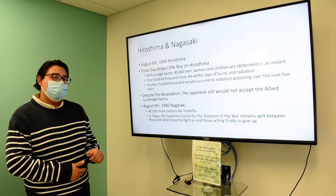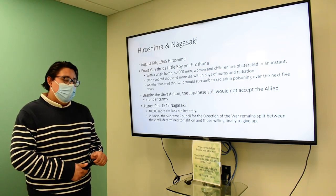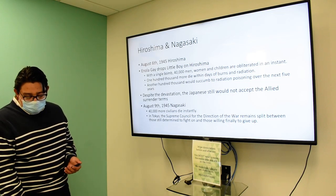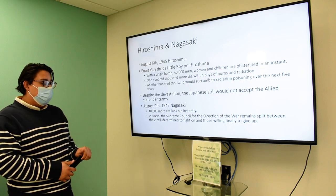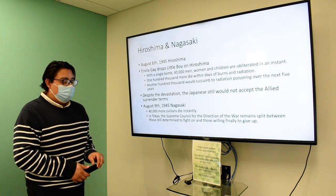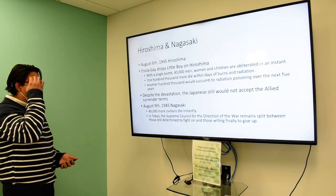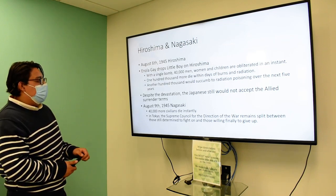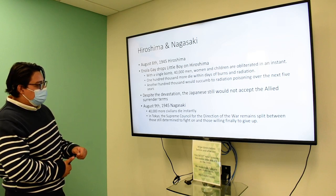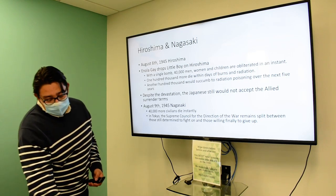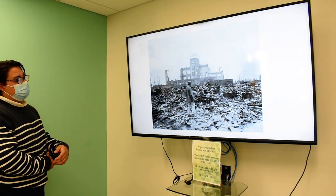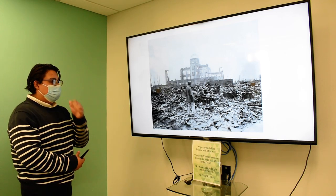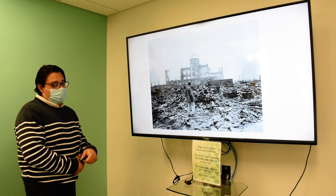Despite the devastation, Japan still would not accept the Allied surrender terms — they tried bargaining, which shows how much Japanese society resisted giving up. On August 9, 1945, Fat Man was dropped on Nagasaki, killing another 40,000 civilians instantly. This picture shows the massive destruction left behind.